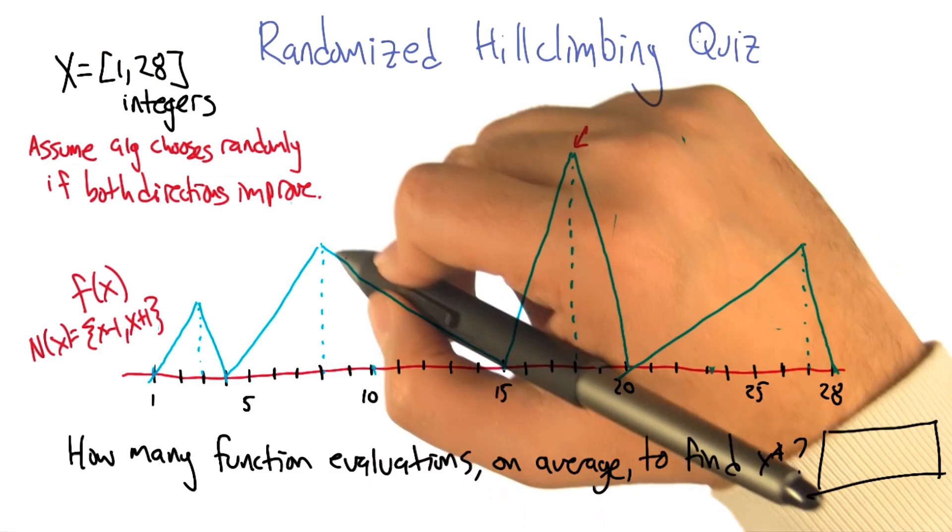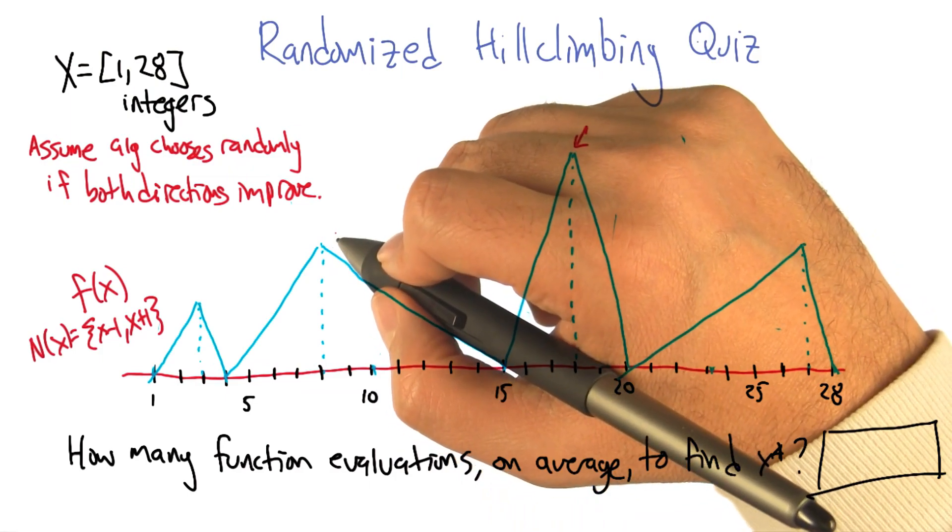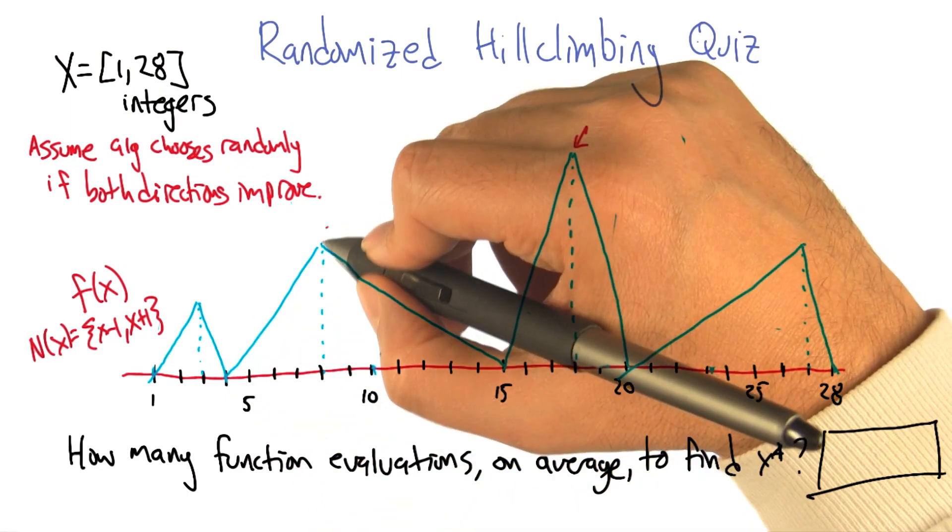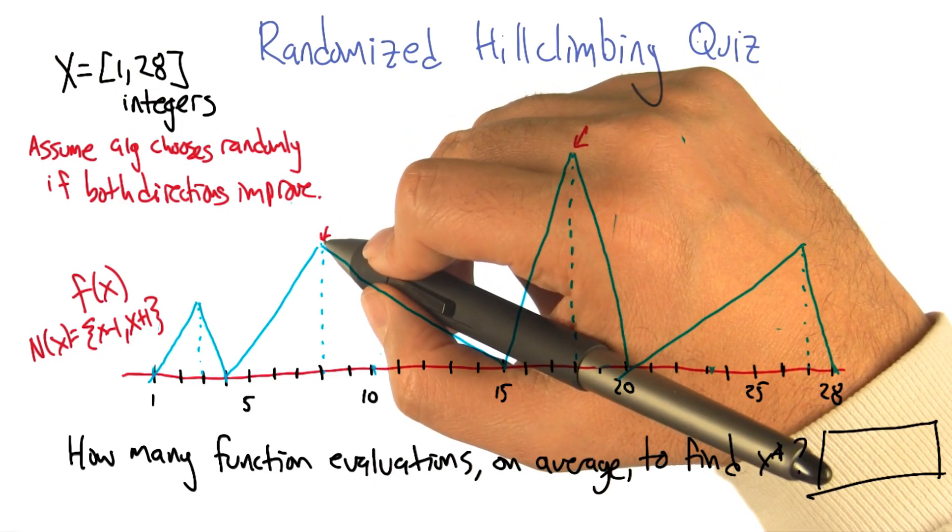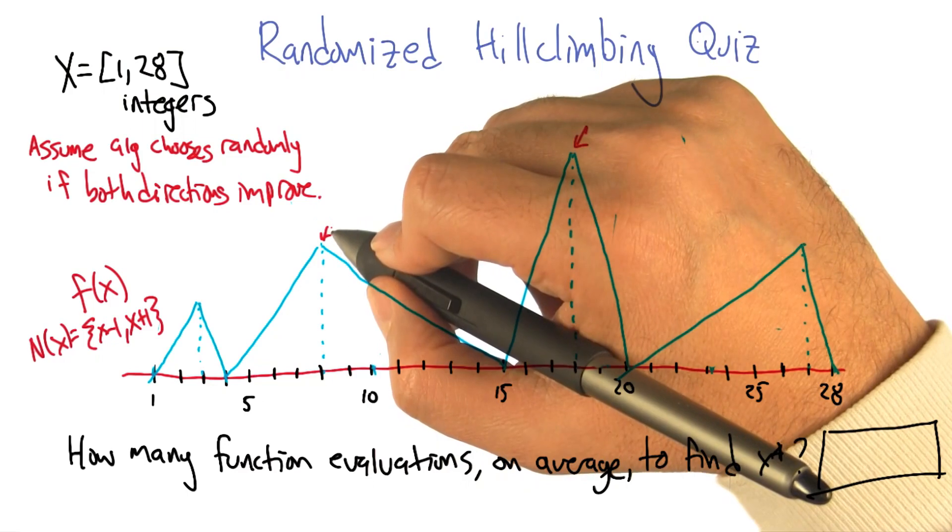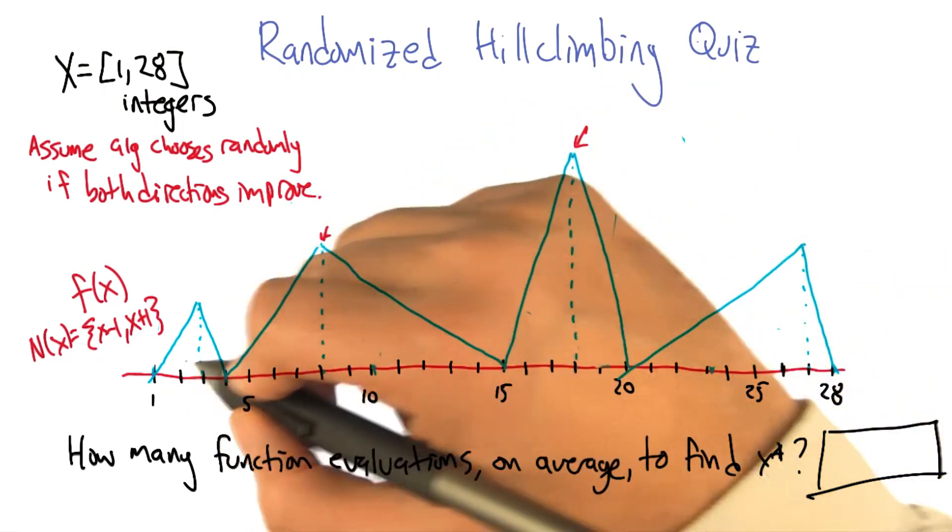And once it gets to the local optimum, let's say it climbs up this hill and ends up at this peak here, it's going to realize it's at a local optimum. Then it's going to trigger a random restart and pick a new X position to start at.